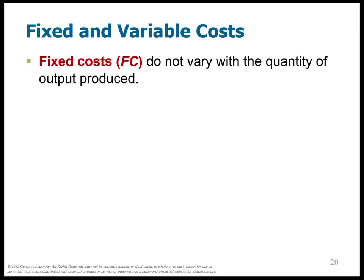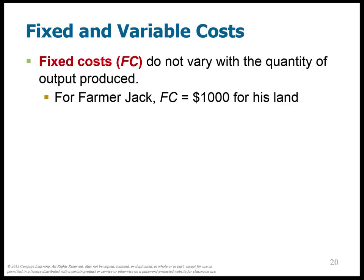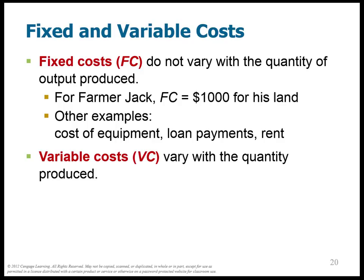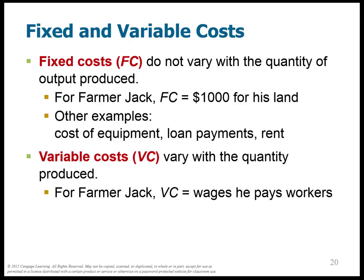Fixed costs do not vary with the quantity of output produced. The fixed cost in this example was $1,000 — it's $1,000 every month no matter how much wheat he produces. In other real-life examples, we can have the cost of equipment, loan payments, or contracted rent — perhaps you have to pay the same amount for your factory space every pay period. Variable costs, however, are costs that do vary with the quantity produced. Variable costs in this example are the wages he pays workers — as he produces more, he has to hire more and therefore pays more wages. If he were using raw materials, those costs would also be variable. Total cost at any time is fixed cost plus variable cost.